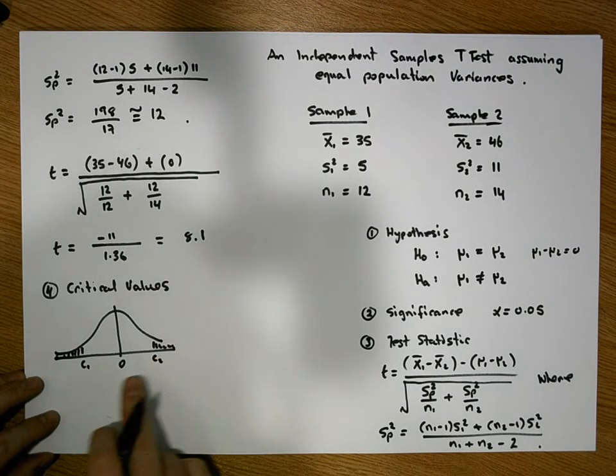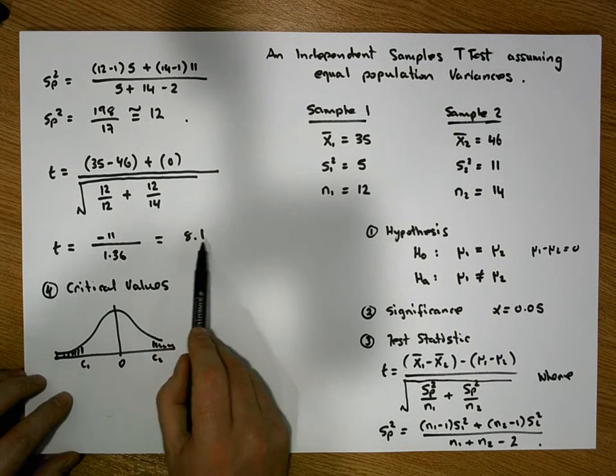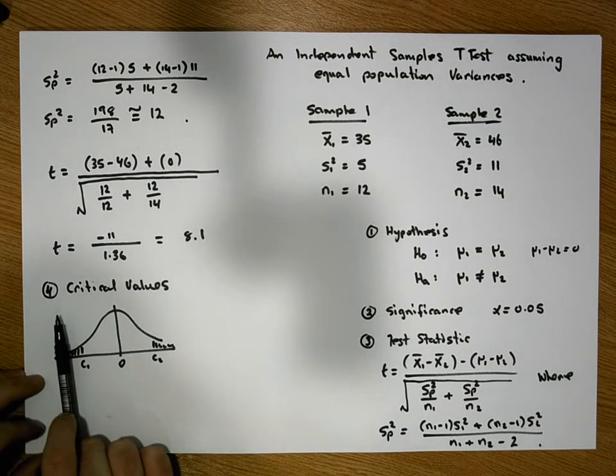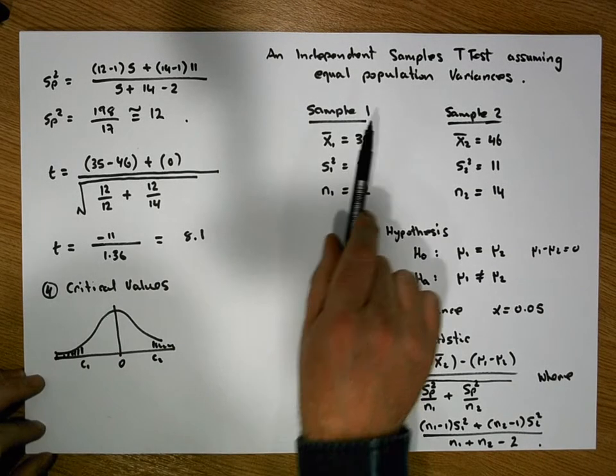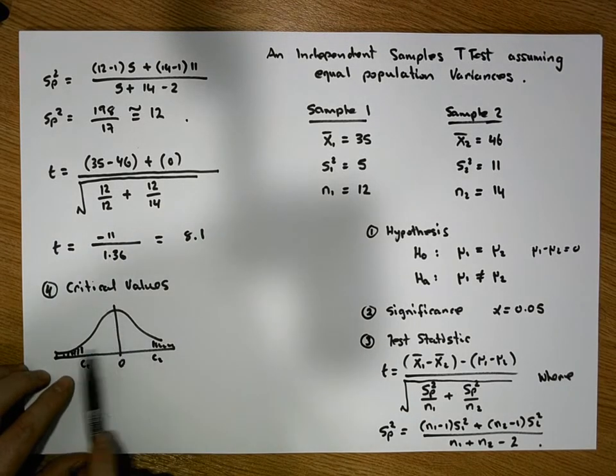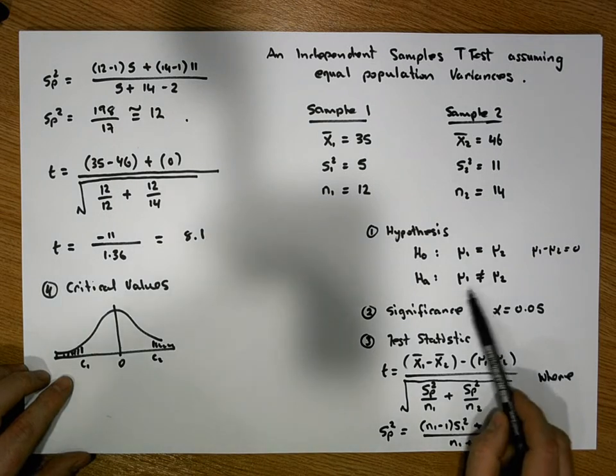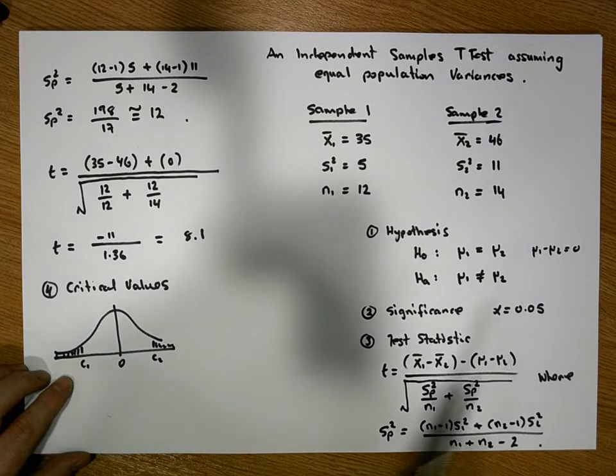It's symmetrical, so once you calculate one, you have the other. And the question is, is 8.1 far enough out into this critical region to be sufficiently different? To be sufficiently far enough away from zero so that we can actually assume that the two populations have different population means.